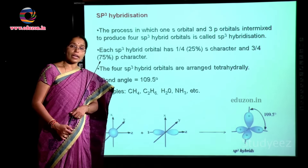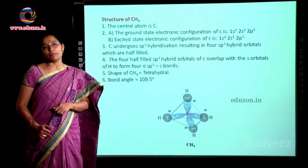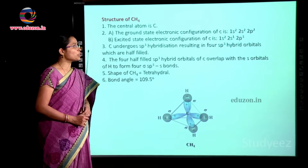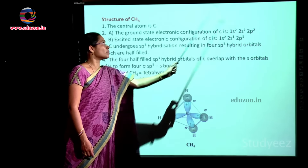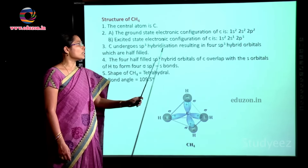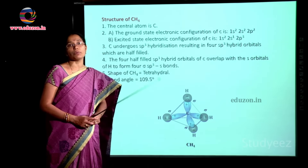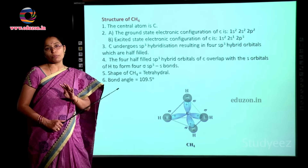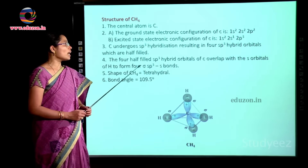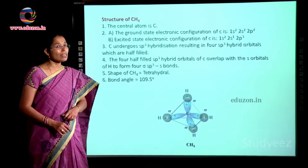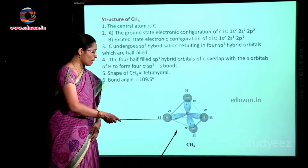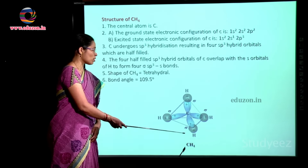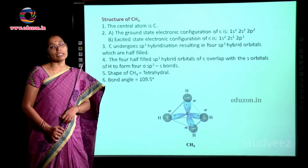For the example of methane, the central atom is carbon. The ground state configuration is 1s² 2s² 2p², giving only two half-filled orbitals. Since carbon forms four bonds, it goes to the excited state configuration 1s² 2s¹ 2px¹ 2py¹ 2pz¹. The one s and three p orbitals intermix to form four sp³ hybrid orbitals, all half-filled. These four sp³ hybrid orbitals arranged tetrahedrally overlap with the half-filled s orbitals of four hydrogen atoms to form four sigma sp³–s bonds. The shape of methane is tetrahedral with a bond angle of 109 degrees 28 minutes.